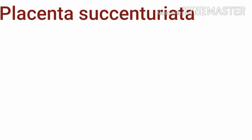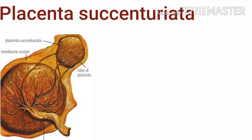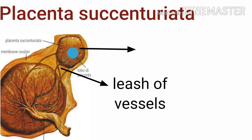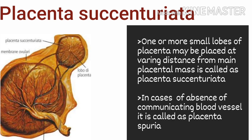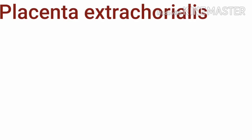First we can see placenta succenturiata. Looking at this placental image, we can see a big placental mass with the umbilical cord attached at its center. The problem is an additional accessory lobe connected to the main bulk of the placental mass by a leash of vessels. This accessory lobe is called the succenturiate lobe, and this condition is called placenta succenturiata. In some cases where the communicating leash of blood vessels is absent, it is called placenta spuria.